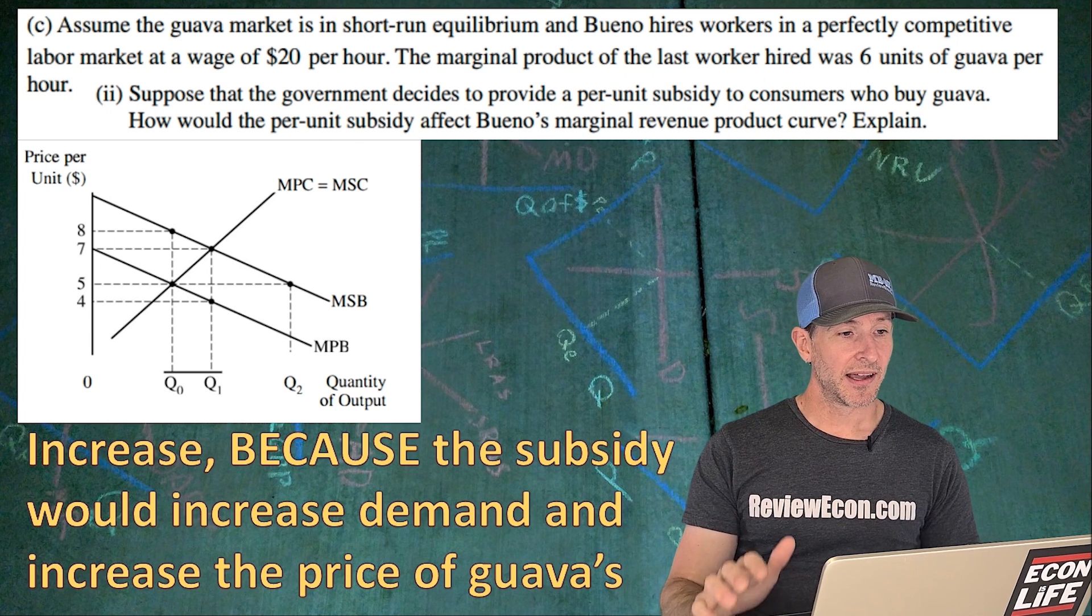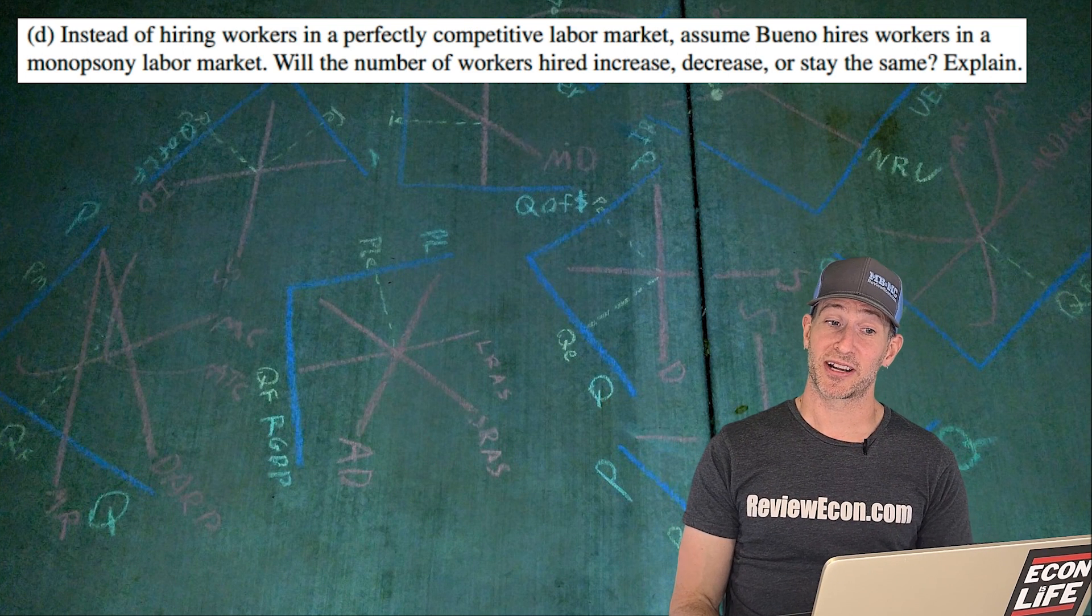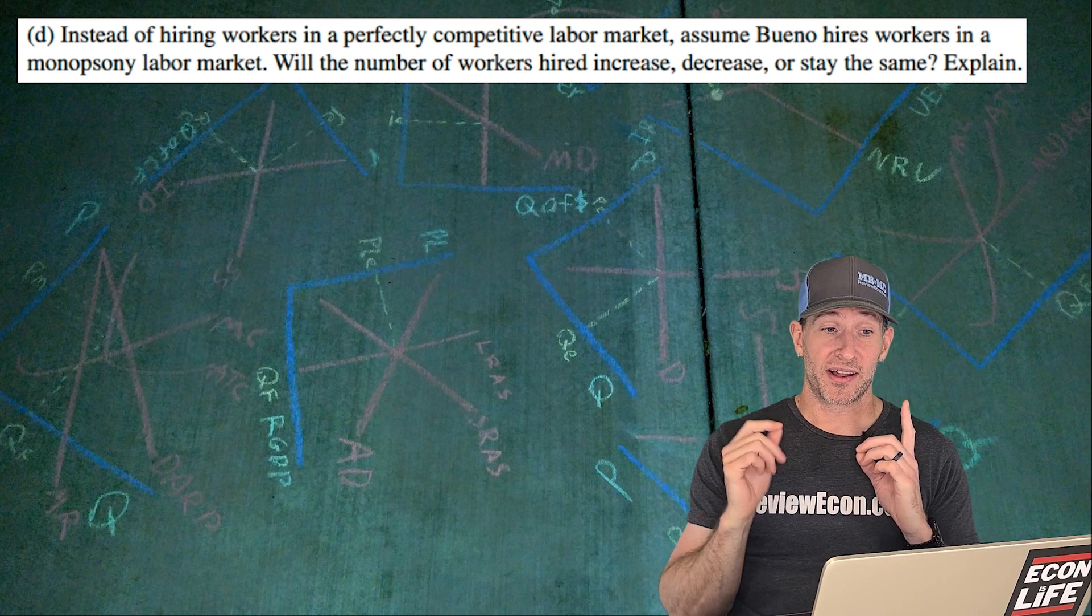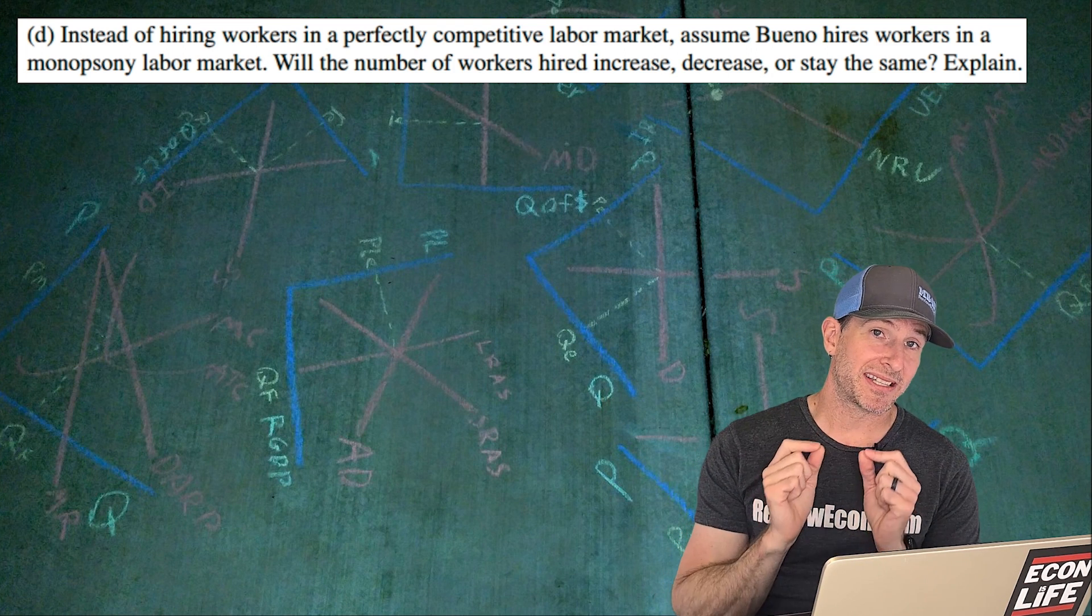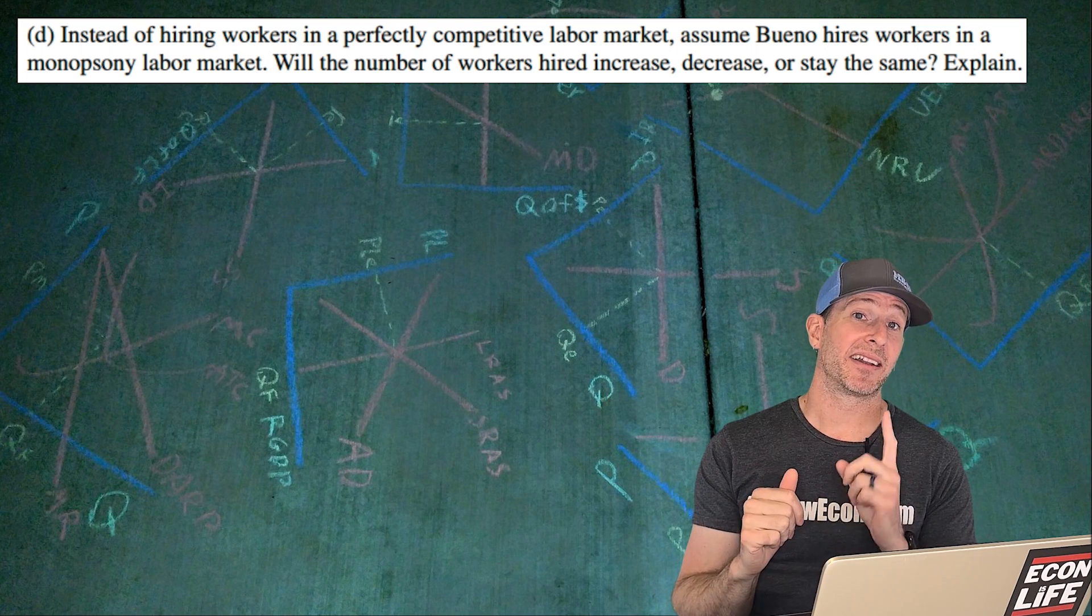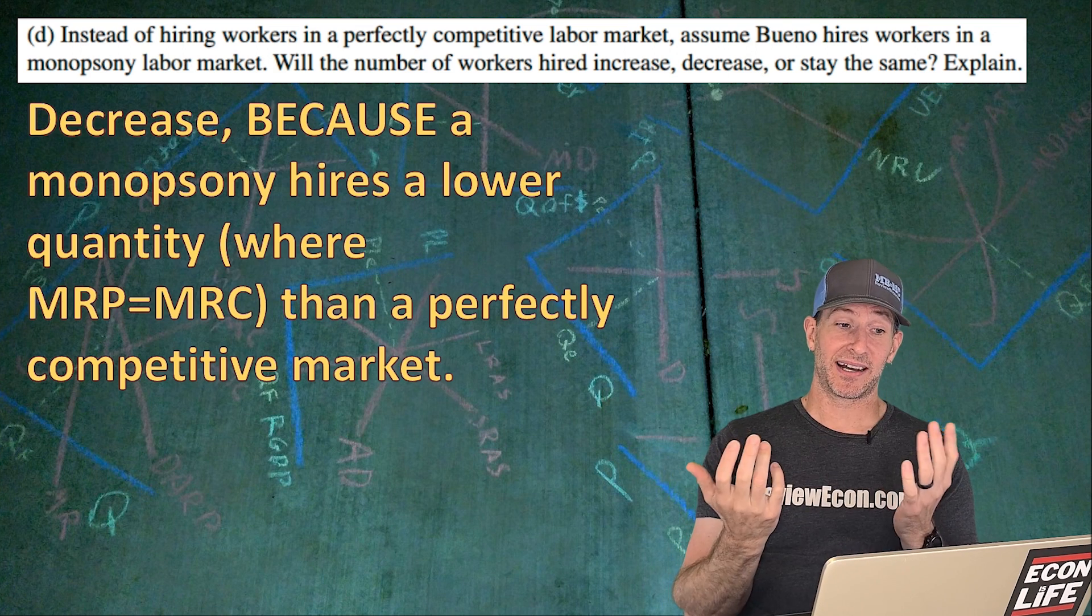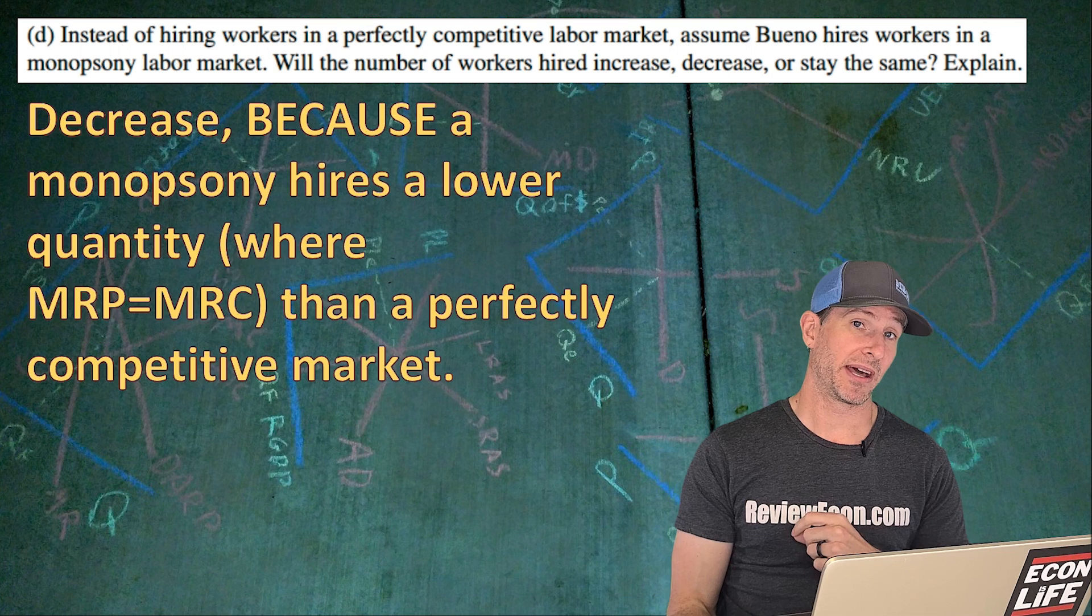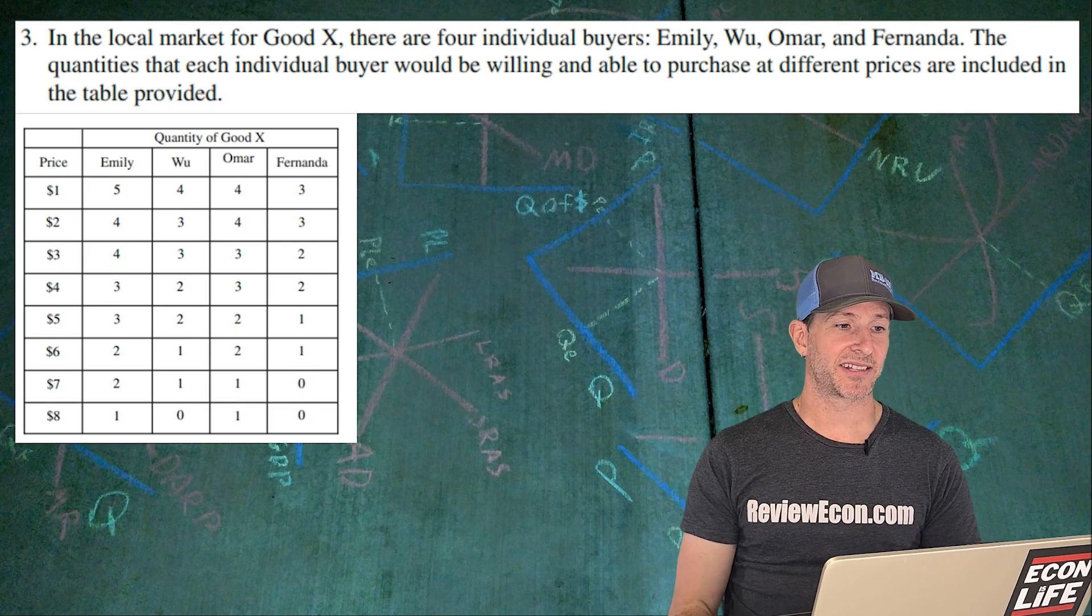On to the next one. Instead of hiring workers in a perfectly competitive market, Bueno hires workers in a monopsony. Will the number of workers increase, decrease, or stay the same and explain? Remember a monopsonistic labor market, you have the monopsony is going to under hire and under pay. So they're going to decrease the quantity hired, and that's because a monopsony hires a lower quantity where the MRP equals the MRC than in a perfectly competitive market. So I think that'll be enough for the explanation.